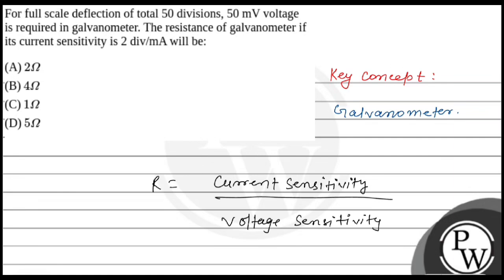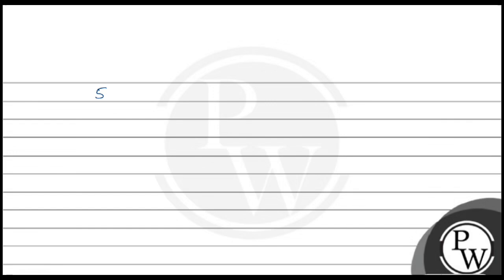In the question it's given that for 50 millivolt we have 50 divisions. So for 1 millivolt it will be 50 upon 50 into 10 power minus 3. So from here we get 10 to power 3. This is the voltage sensitivity, right.